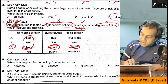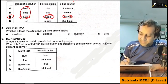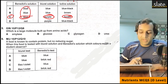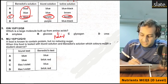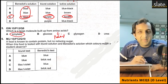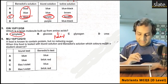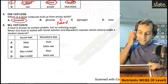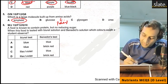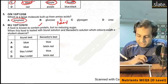Which large molecule is made up of amino acids? Amino acids make up proteins. Next question: food is known to contain proteins. So which test will be positive?